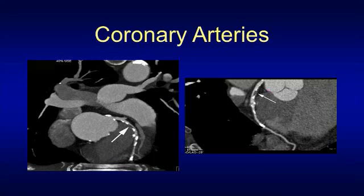Coronary artery imaging requires a gated acquisition so that we can evaluate these small vessels at a point in the cardiac cycle where the motion artifact is minimized. Here is a patient who was being imaged for the ascending aorta and who also has coronary artery disease. Many of these patients will have concomitant disease in the aorta and in the coronary arteries.